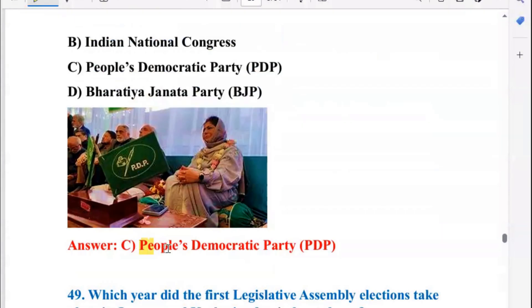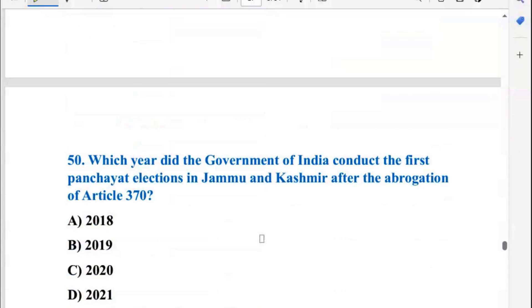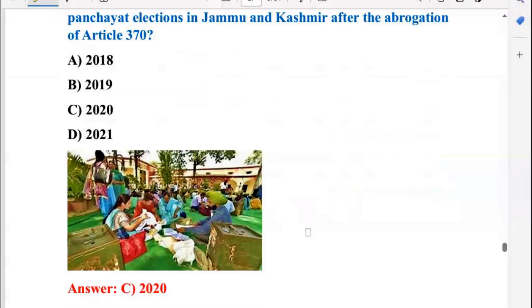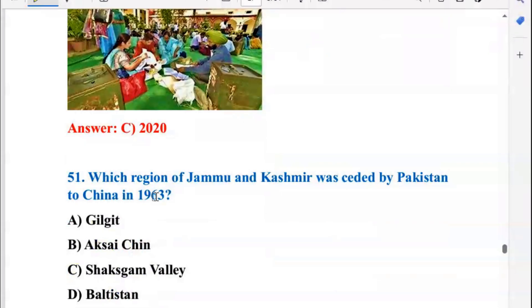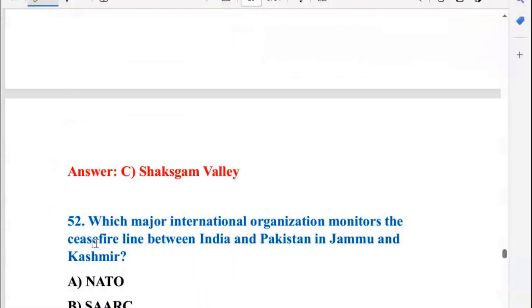Which political party is led by Mehbooba Mufti in Jammu and Kashmir? That was the People's Democratic Party, also known as PDP. In which year did the first legislative assembly elections take place in Jammu and Kashmir after independence? That was 1951. In which year did the Government of India conduct the first panchayat elections in Jammu and Kashmir after the abrogation of Article 370? That was in 2020, so C is the right answer. Which region of Jammu and Kashmir was ceded by Pakistan to China in 1963? That was the Shaksgam Valley, so C is the right answer.